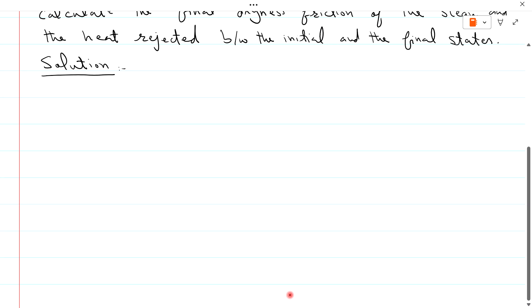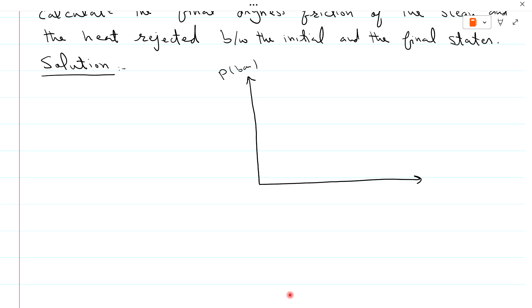I want to show all data on a PV diagram. Pressure is in bar and volume is in cubic meter or cubic meter per kg — this is specific volume. This is the saturation curve. At point 1, pressure is 15 bar. After cooling it comes to dry saturation, which means the steam is initially superheated.